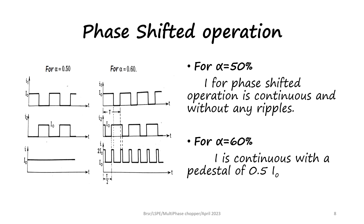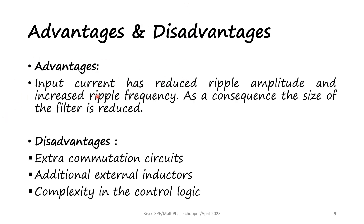There are some advantages and disadvantages of using multi-phase choppers. The advantages are that the input current has reduced ripple amplitude and increased ripple frequency; as a consequence, the size of the filter is reduced. The disadvantages are that extra commutation circuits are needed, as the choppers must be switched on and off at appropriate time intervals. Additionally, external inductors are required and there is complexity in the control logic.